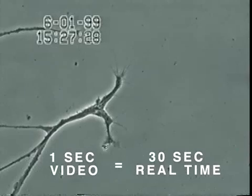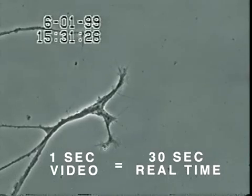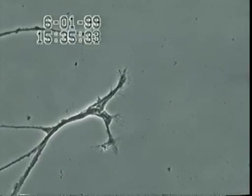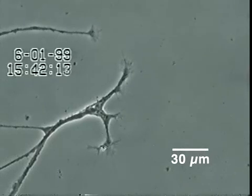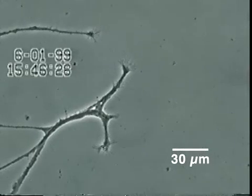In this experiment, neurons also isolated from snail brain tissue were grown in culture for several days, after which very low concentrations of mercury were added to the culture medium for 20 minutes.